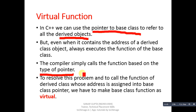The compiler simply calls the functions based on the type of the pointer. Since the pointer's type is base class, all functions defined in base class will be executed. To resolve this problem and to call the functions of the derived class whose address is assigned into the base class pointer, we have to make the base class function virtual. This problem arises because the functions in base class and derived class share the same name, arguments, and return type — the same prototype.